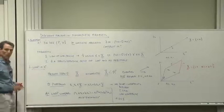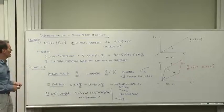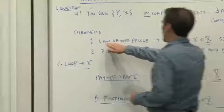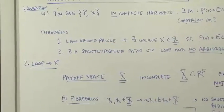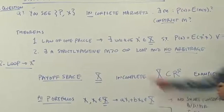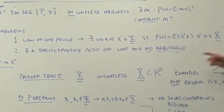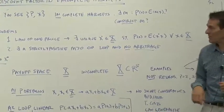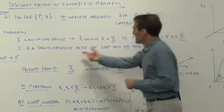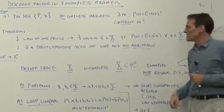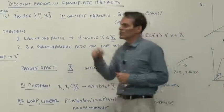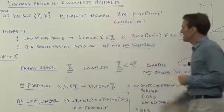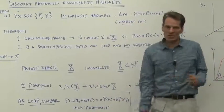We're going to build up to two theorems about the existence of the discount factor. First one is based on the law of one price, and if the law of one price holds, then there is a unique payoff x* that can act as a discount factor. Second one: if there's no arbitrage, a different condition, then we'll find there's a strictly positive discount factor.